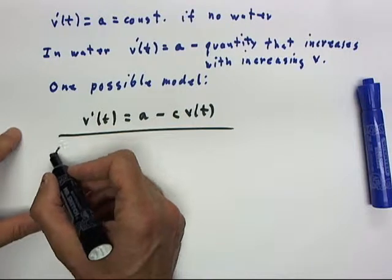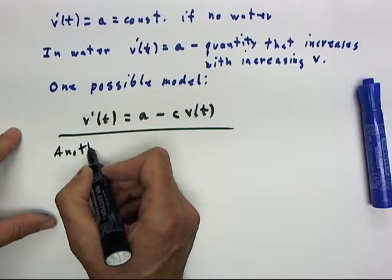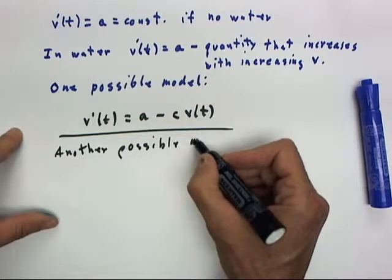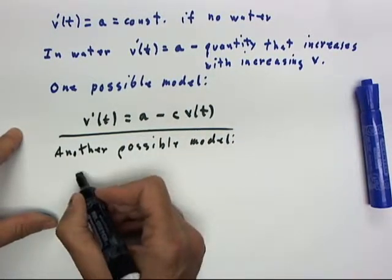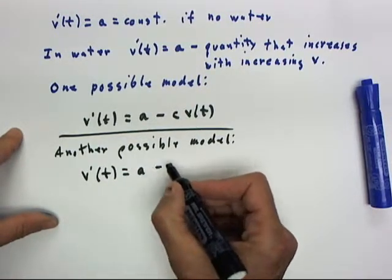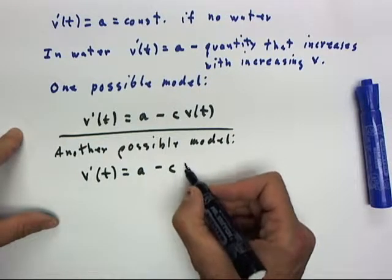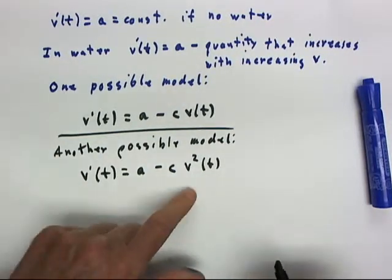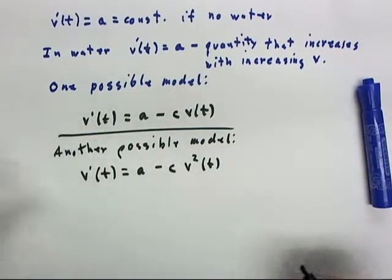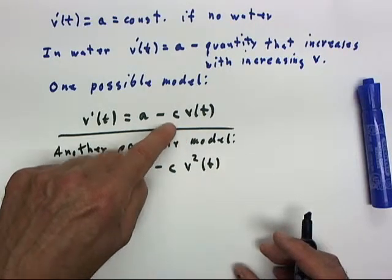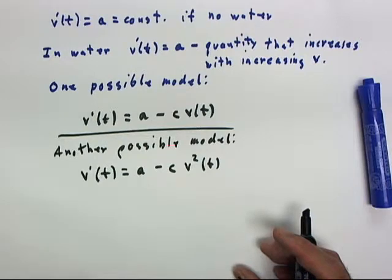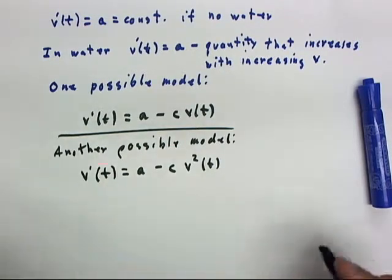Another possible model, very similar, would be v' of t equals a minus some constant times the square of the velocity. And it turns out that if you go through the physics of it and test these things and analyze them, there actually are cases when the velocity isn't too great where this kind of model pretty much applies, and others where this model pretty much applies.